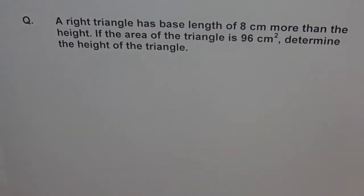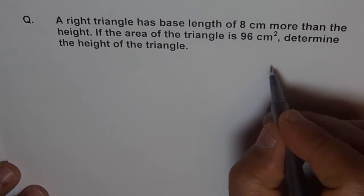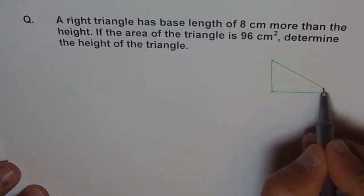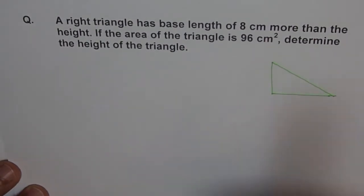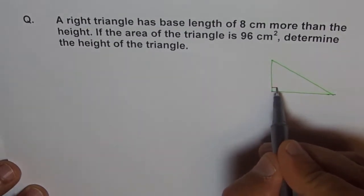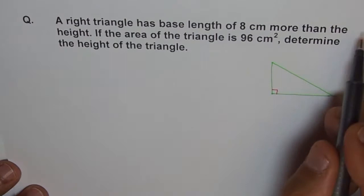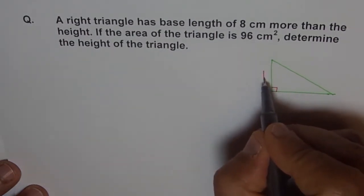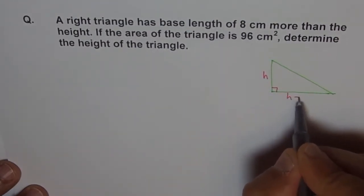The problem statement is: a right triangle has base length of 8 cm more than the height. If the area of the triangle is 96 cm square, determine the height of the triangle. So, we have a right angle triangle here. Let's try to sketch this. This is a right angle triangle, this is 90 degrees, and the height is h, so base is h plus 8.